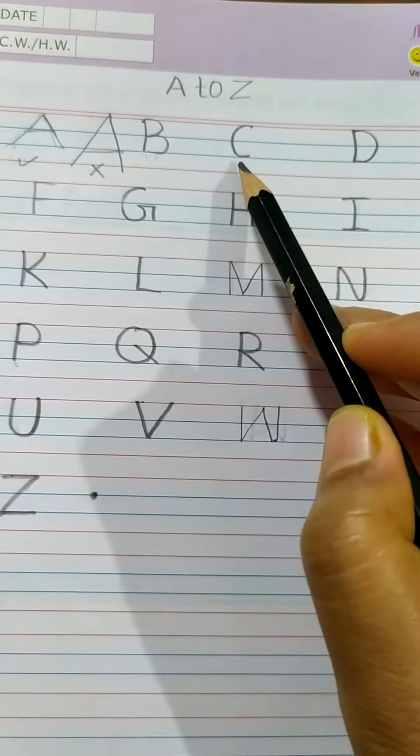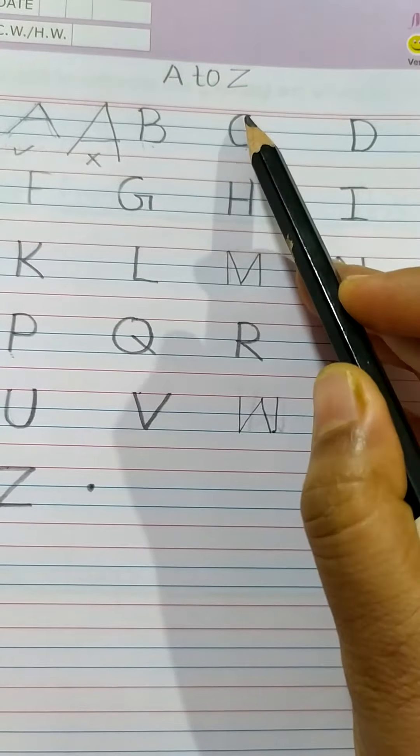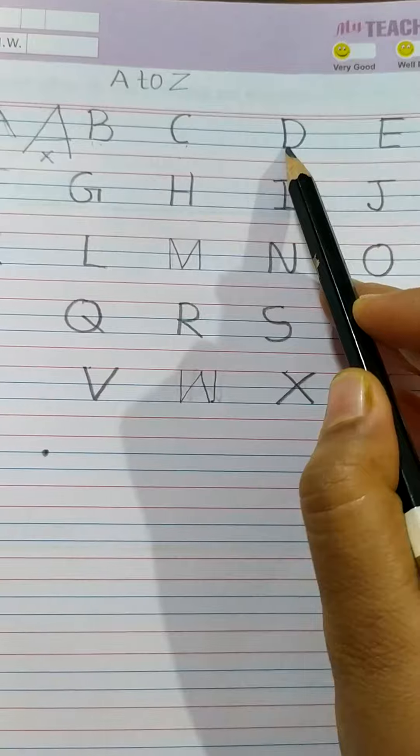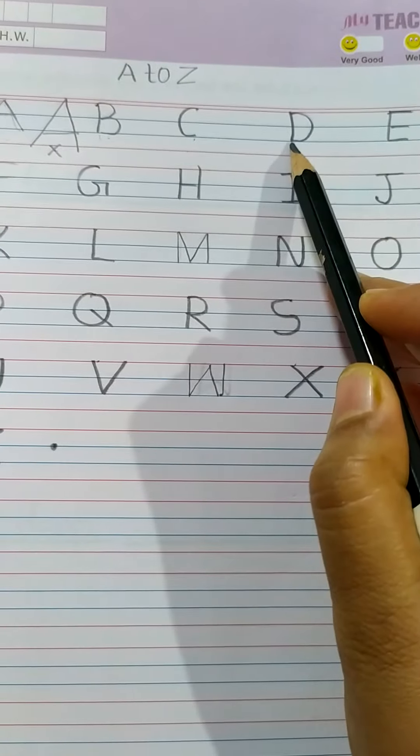C, red line to blue line, letter C. Letter D, red line till blue line and put here curve. This is letter D.